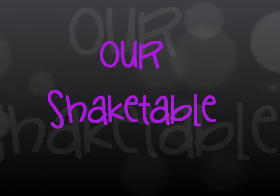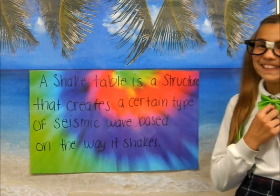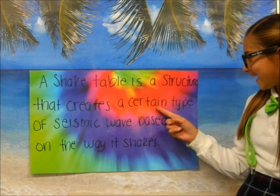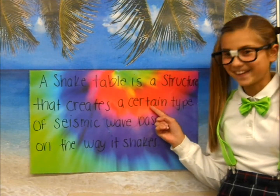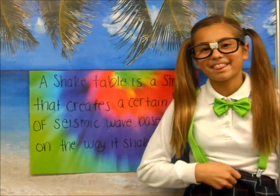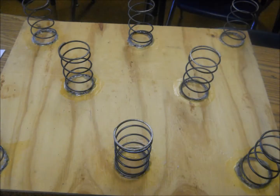As you can see here, we made our shake table by gluing big industrial springs. A shake table is a structure that creates a certain type of seismic wave based on the way it shakes. We took this jug and pushed it on the top board to make the springs' compression release, bounce upward, and create secondary waves.